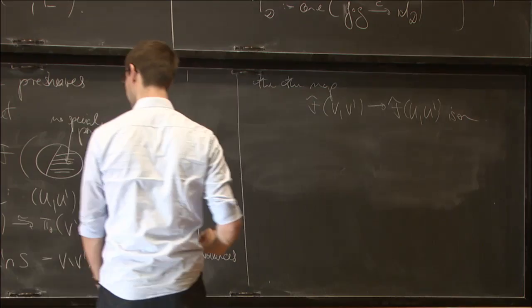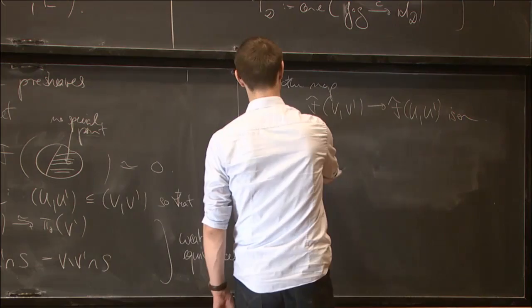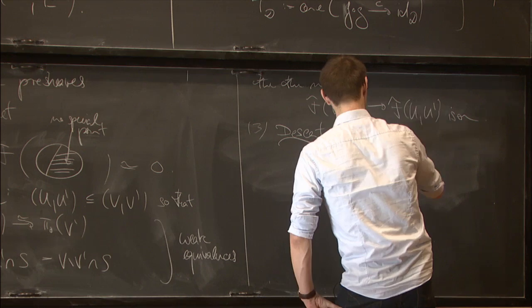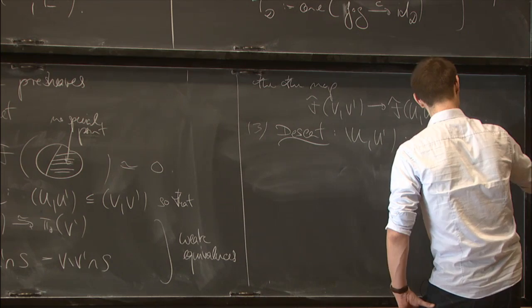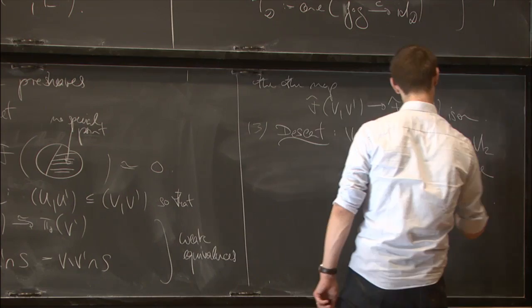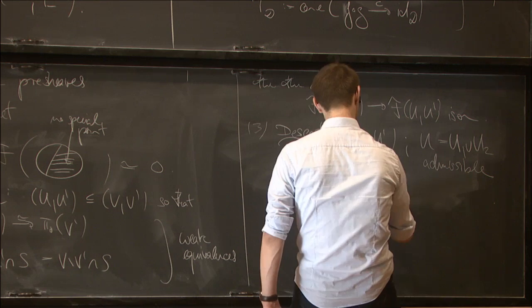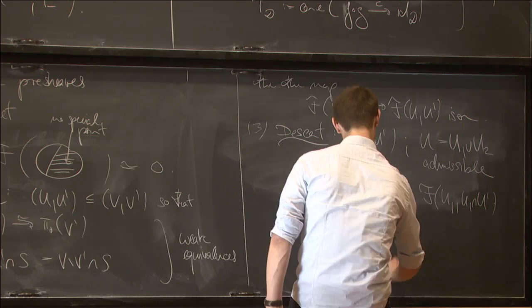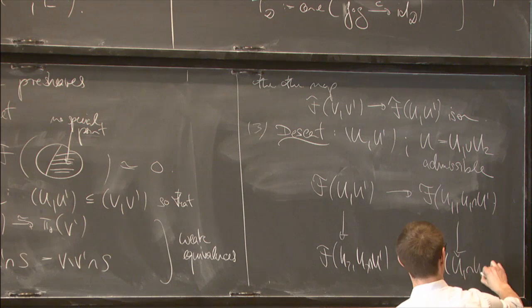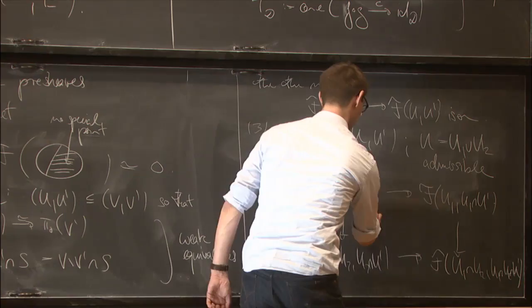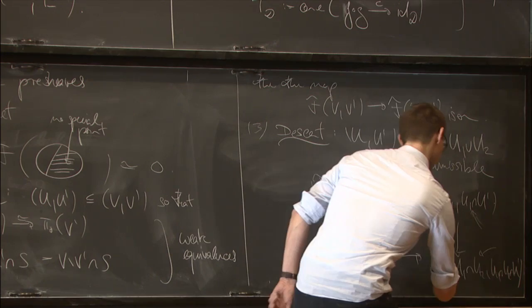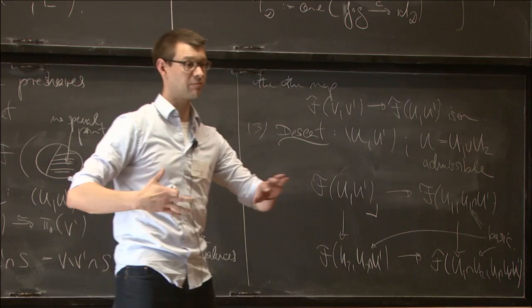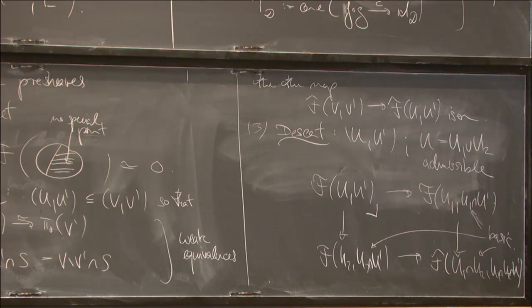There's a third condition called descent: if I have a basic pair (u, u-prime) and can cover u by u1 union u2 admissibly, I have a corresponding pullback square. This goes to f(u1, u1 ∩ u-prime), f(u2, u2 ∩ u-prime), and f(u1 ∩ u2, u1 ∩ u2 ∩ u-prime), and this is a pullback square whenever all three are actually basic — I'm only allowed to cover in an admissible way such that all intersections are again admissible.